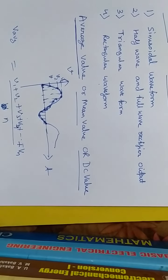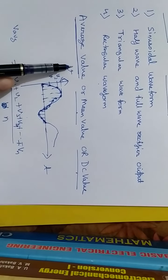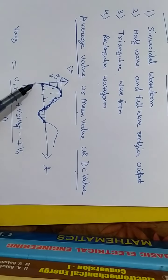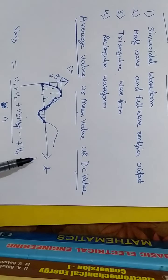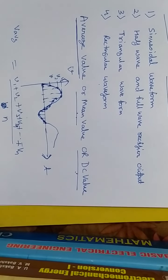First of all, what is average value? It is also called mean value or DC value - average value, mean value, and DC value are the same thing. As you know, in AC - AC is an alternating supply - so we have a current or voltage which will vary in magnitude and direction.